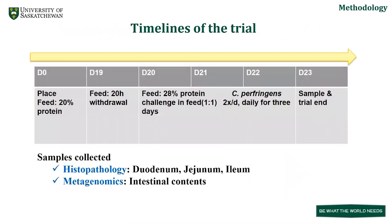The trial timeline was as follows: at day zero, birds were placed and fed a 20 percent protein diet up to day 18. At day 19, feed withdrawal was performed for 20 hours, followed by a protein change to 28 percent at day 20, and C. perfringens challenge given twice daily for three days in a feed-to-media ratio of one-to-one. At day 23, sampling was performed and the trial ended.